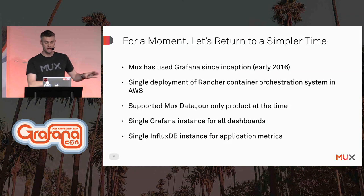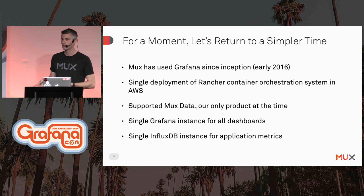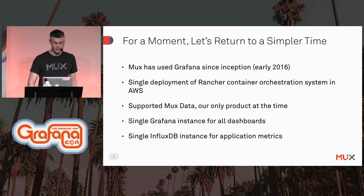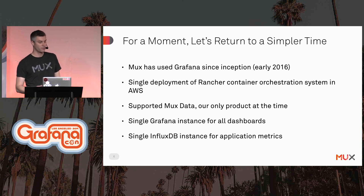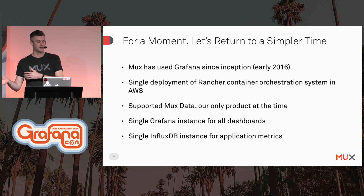Let's rewind to an earlier time when our company was much smaller and the product offering was simpler. We ran just on Amazon Web Services with a single deployment of Rancher, a container orchestration system similar to Kubernetes. We had just a single region — US East 1 — a single large InfluxDB database for application performance metrics, a single Grafana server hosting dashboards. Very simple. And we used Telegraph to send application performance metrics to InfluxDB.